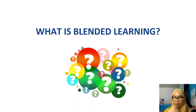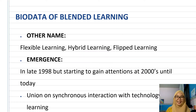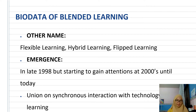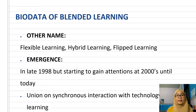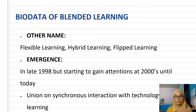What is blended learning? It is also known as flexible learning, hybrid learning, and flipped learning. It started to emerge in 1998 but began to gain attention in the 2000s until today. Blended learning is the union of synchronous interaction with technology-based learning and asynchronous interaction.